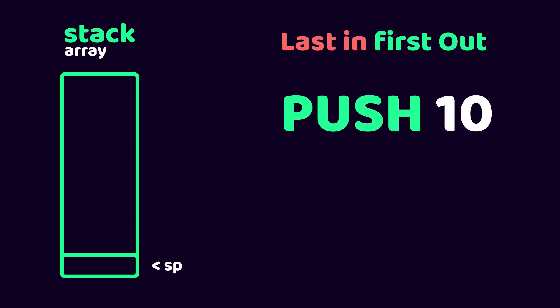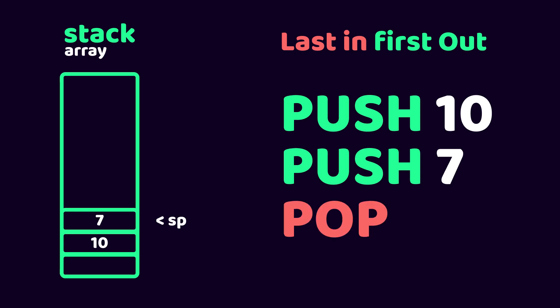As an example, we say push 10. This moves the stack pointer up one index and puts the 10 on that index. We can repeat this with other numbers. The pop operation is the opposite — it returns the value that the stack pointer is pointing at, and then moves the stack pointer down one index, effectively forgetting that value is on the stack.